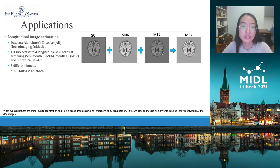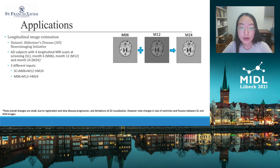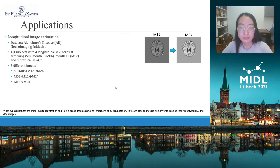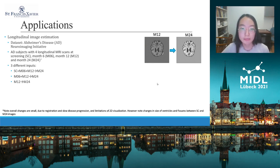The first configuration uses Screening, Month 6, and Month 12 to predict the target image at Month 24. The second uses Month 6 and Month 12 to predict Month 24. The third uses only Month 24 as input to predict the target image.